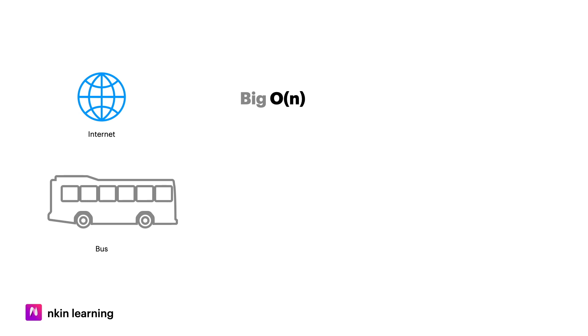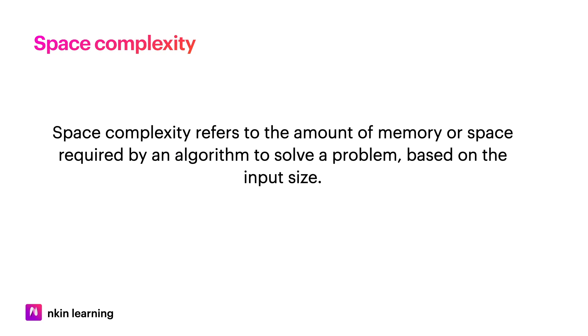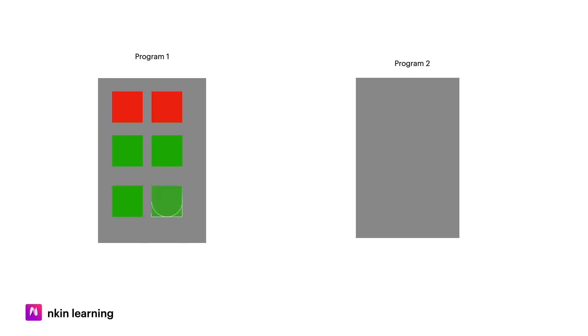I'm doing a physical example here. We represent Big O(1), which is called constant time complexity — it is relatively constant. We also represent space complexity, which is the amount of memory or space that a program uses to run.